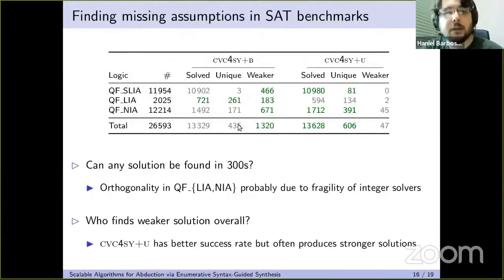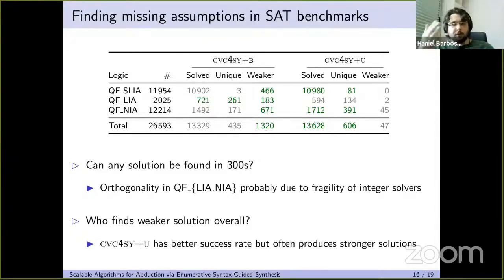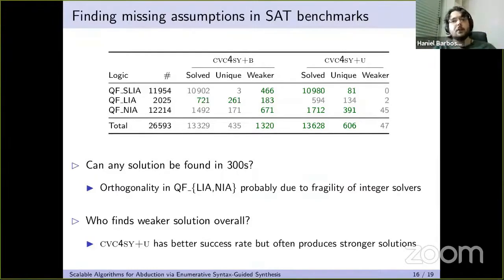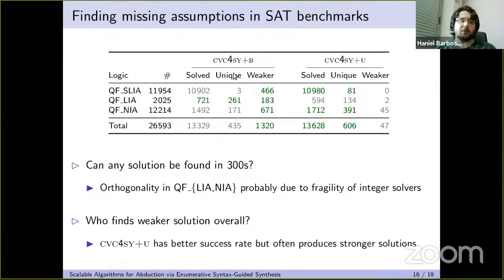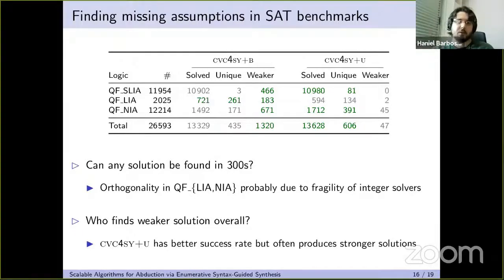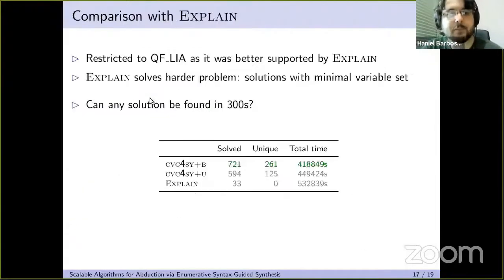We also compared the logical strength of solutions. The baseline enumerative approach often produces weaker solutions, which is intuitive: it enumerates solutions in increasing order of size, and often finds weaker solutions this way. The divide-and-conquer approach combines smaller pieces however it can to find a solution and does not specifically optimize for minimality, so it can be more costly in that regard — but finding weaker solutions is a benefit of the enumerative approach.